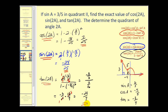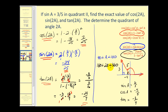We could also have found tangent two A by dividing sine two A over cosine two A to get negative twenty-four sevenths, but it was useful to practice the identity. For the last question, we determine the quadrant of angle two A. Since angle A is in the second quadrant, A is between 90° and 180°, so two A is between 180° and 360°, placing it in quadrant three or four. Since cosine two A is positive, the x-coordinate must be positive, so angle two A must be in the fourth quadrant.